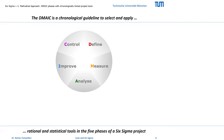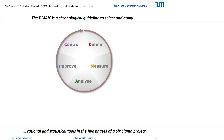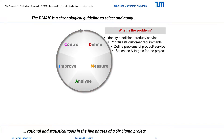Six Sigma projects are processed along the phases of the DMAIC cycle, and each phase covers a set of chronologically interlinked rational and statistical tools. In the define phase we answer the question: